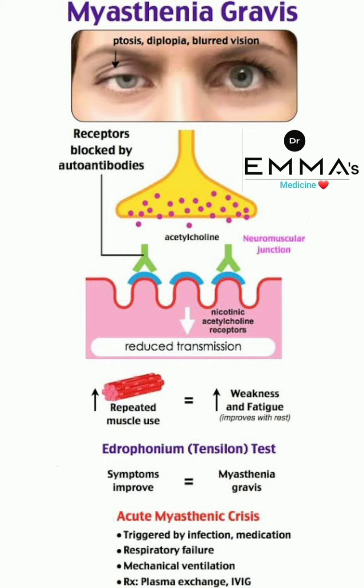The nicotinic acetylcholine receptors have reduced transmission. As a result of this receptor blockade by autoantibodies at the neuromuscular junction, with repeated muscle use there is increased weakness and fatigue, which improves with rest.